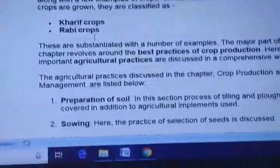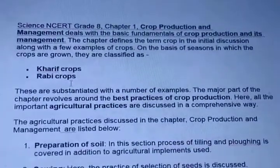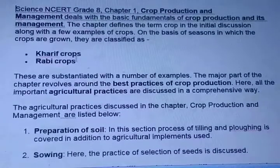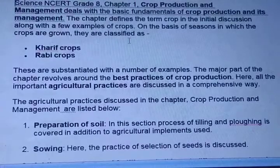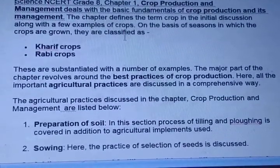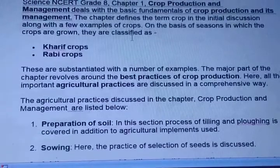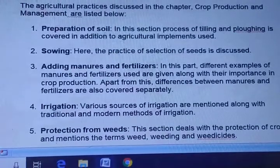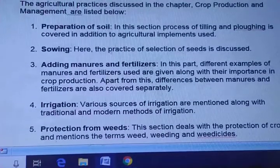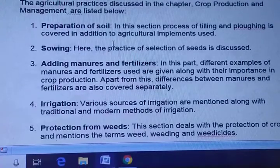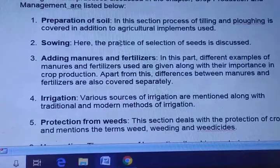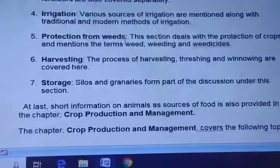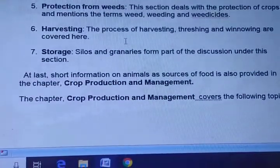In this chapter we will specially study about the management which deals with the fundamentals of crop production and its management. We will especially discuss a few examples of crops - the seasonal crops like Kharif crops and Rabi crops. After that, the best practices of crop production and agricultural practices: preparation of soil, sowing, adding manures and fertilizers, irrigation, protection from weeds, harvesting, and storage.